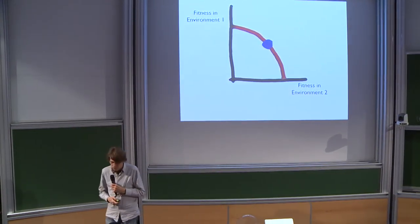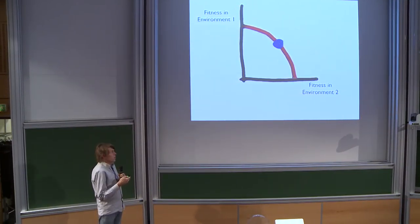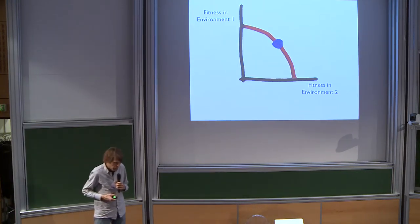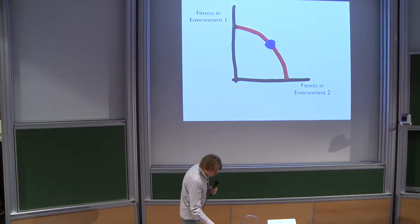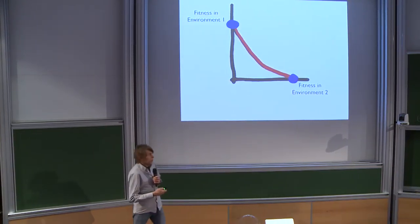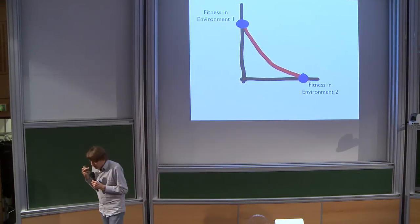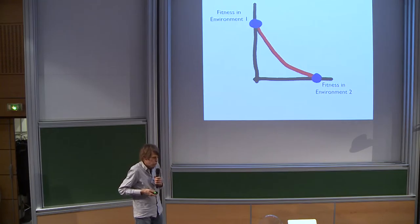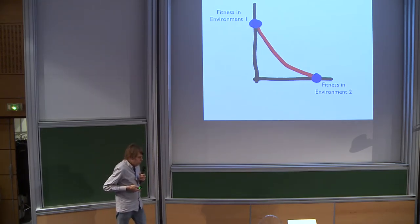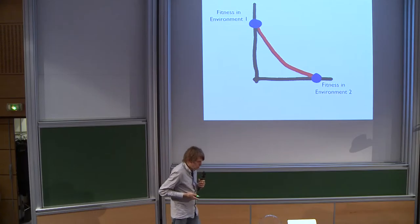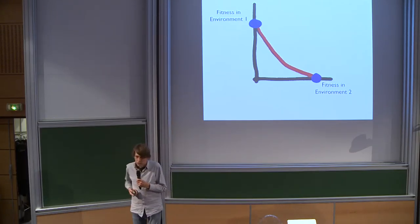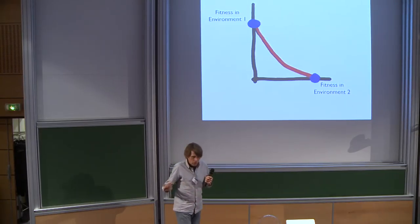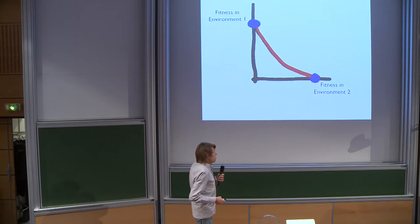The evolutionary end result depends very much on the shape of this line. You can have a shape which is concave, or a shape which is more convex. The end result — represented by the blue dots — is a generalist population if the trade-off shape is convex, whereas you get two specializing populations if the trade-off shape is concave. This gives us, as evolutionary biologists, insight into what conditions favor the specialization of organisms.